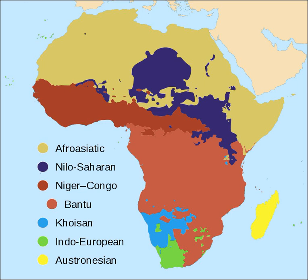Khoe comprises around ten languages, the primary family of Khoisan languages of Namibia and Botswana. Sandawe is an isolate of Tanzania, possibly related to Khoe. Kwadi is a language of southern Africa. Tuu, or Taa-Kwi, has two surviving languages. Hadza is an isolate of Tanzania. Bangime is a likely isolate of Mali. Jalaa is a likely isolate of Nigeria. Laal is a possible isolate of Chad. Khoisan is a term of convenience covering some 30 languages spoken by around 300,000 to 400,000 people.